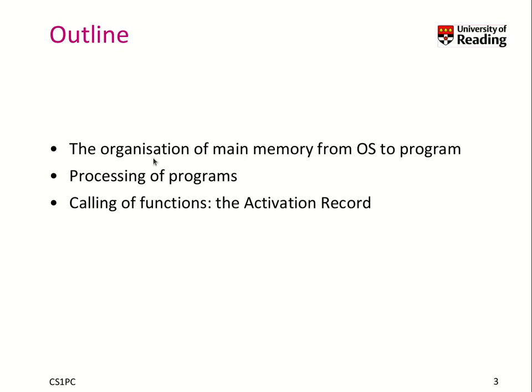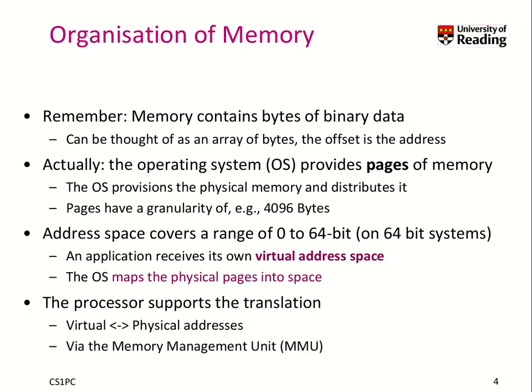As an outline, we will talk about the organization of main memory and also look at our program from the operating system perspective. We'll talk about the processing of programs next, and finally discuss how functions are organized in main memory — this is the so-called activation record that is stored on a per function call basis.